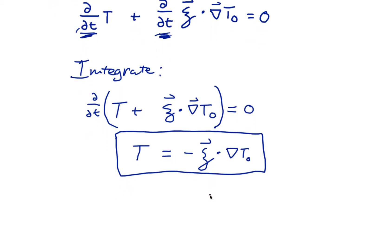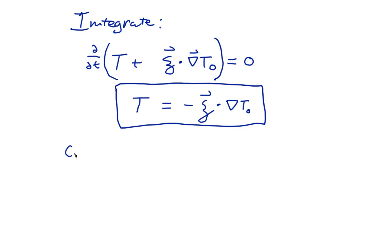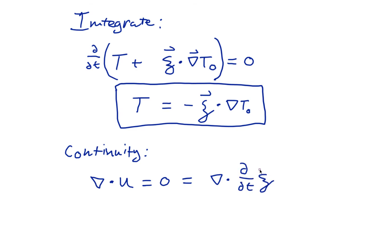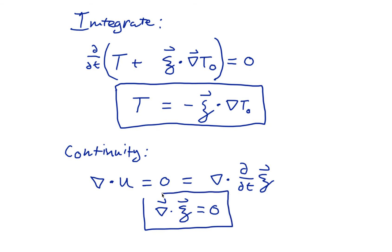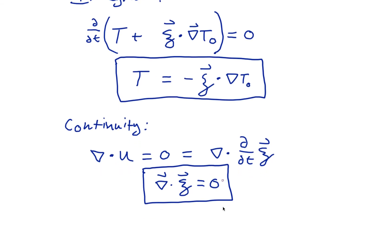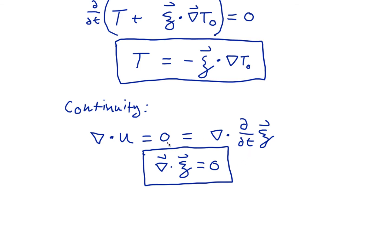Let's look at our continuity equation in this context. Our continuity equation is that the divergence of u equals zero. The divergence of u is also the divergence of d/dt of ξ, by our definition of u being the time derivative of ξ. So this tells us that the divergence of ξ is zero. The divergence of ξ could be something non-zero and still have its time derivative equal to zero — it's essentially a gauge freedom within the system — but we can choose to have the divergence of ξ itself be zero. We can set the gauge to zero and that's fully self-consistent.